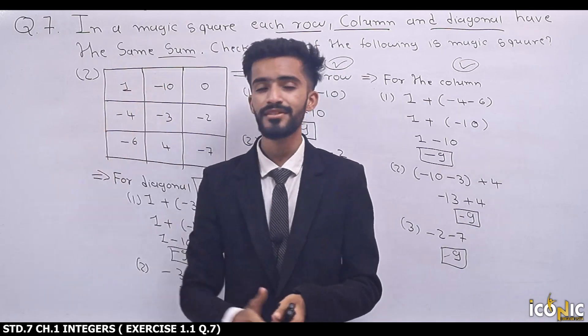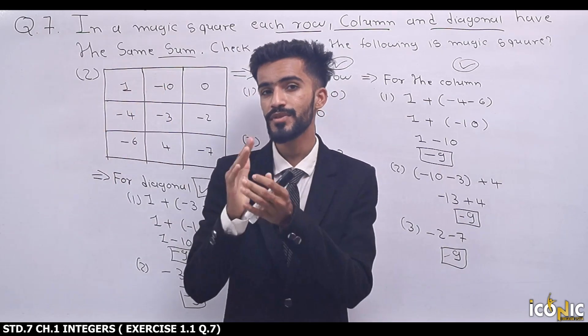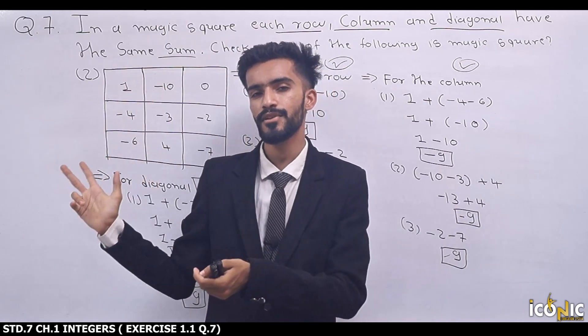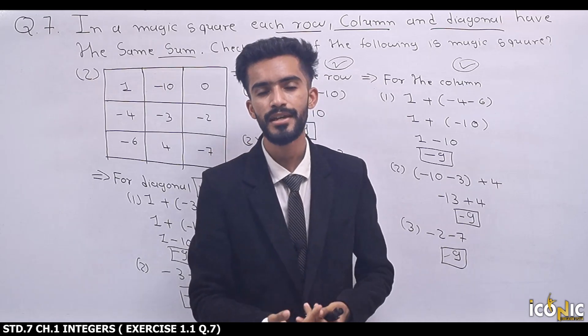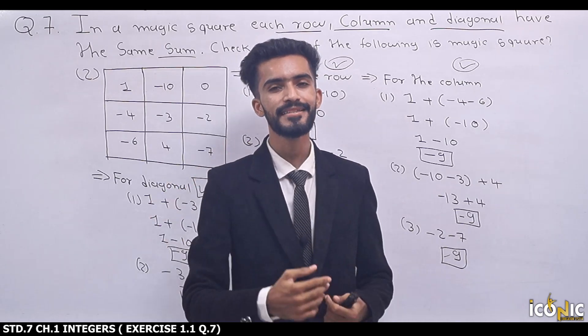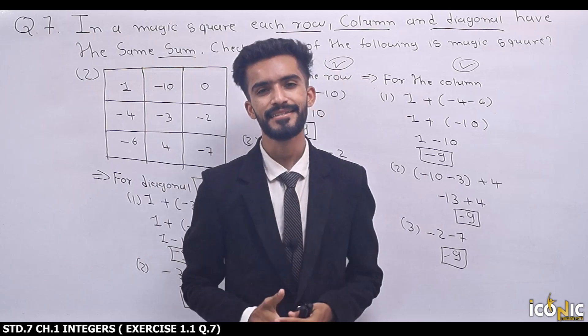Question 7 example complete. The second square is the magic square. Next example.